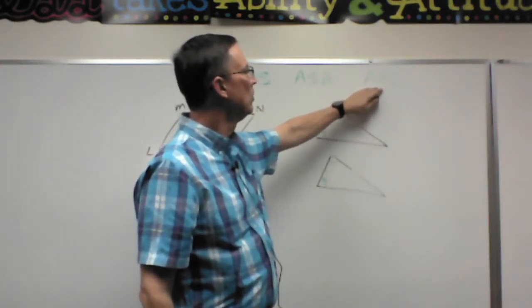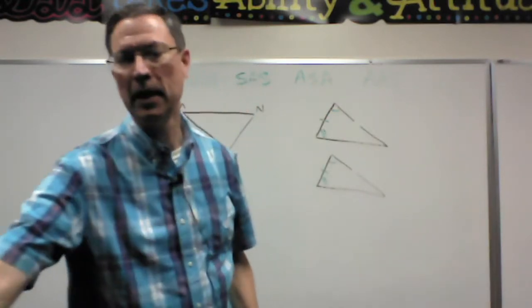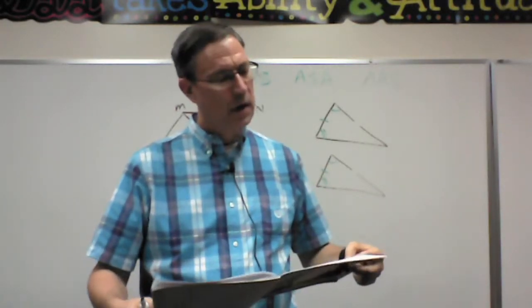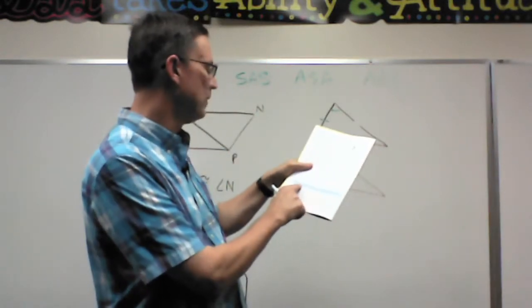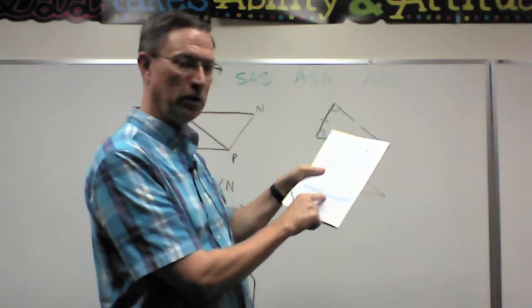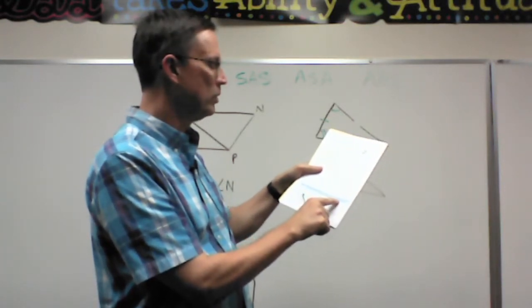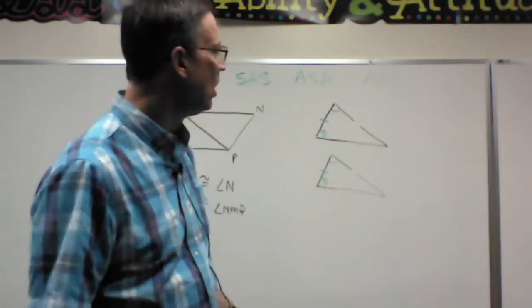Okay, so that's where this gets a little trickier: angle angle side. All right, and let's see, that was on page 11 here at the bottom, postulate 17. If two angles and a side not included of one triangle are congruent to two angles and a side not included.